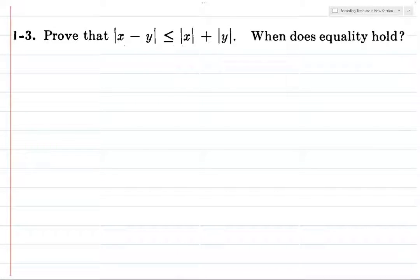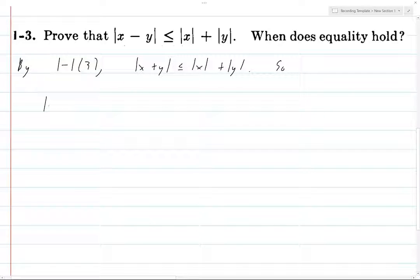Alright, here's another quick exercise. We want to prove that this holds. By theorem 1-13, |x + y| is less than or equal to |x| + |y|. So for |x - y|, I'll write on another line.